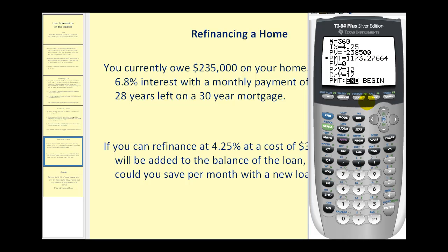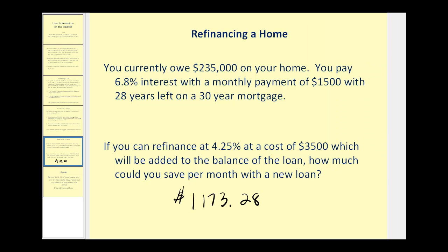Let's write that down. Comparing the two monthly payments, you can see it drops considerably — well over $300 is saved per month. The only thing we do have to consider is that this new loan is going to be for 30 years versus the old loan which is only for 28 years. But in most cases, this refinance at a lower rate, even though we had some additional costs, is going to save a considerable amount of money each month.